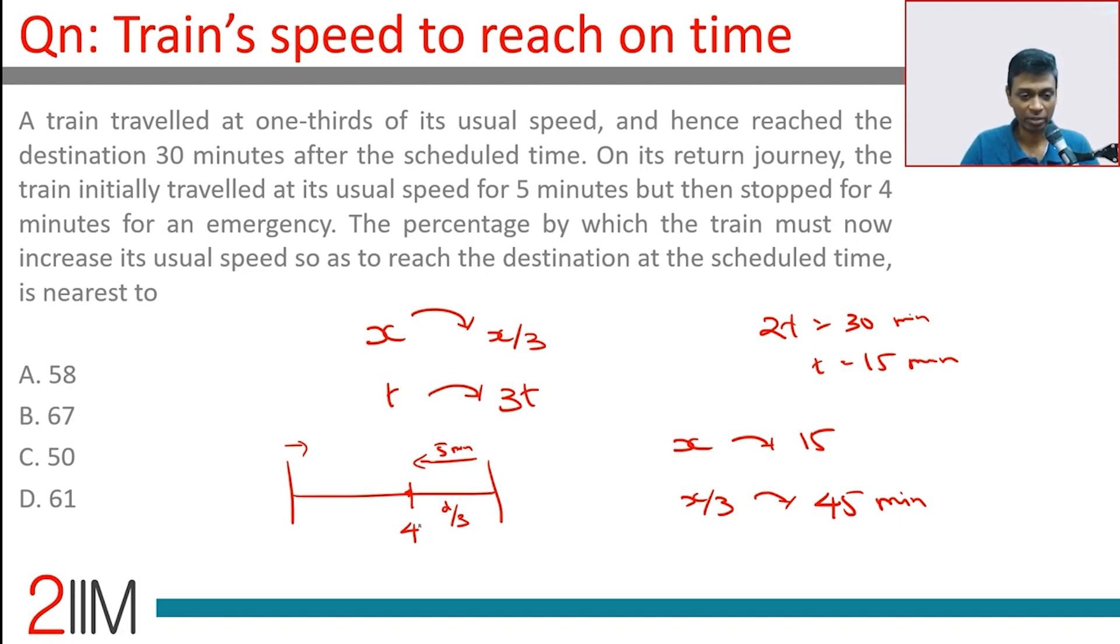5 plus 4, 9 minutes are gone. The scheduled time is 15 minutes. So the train should cover this distance in 6 minutes. If the 4 minute break had not been there, it would have covered in 10 minutes.